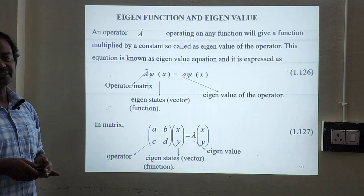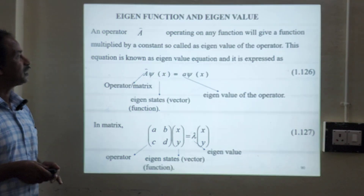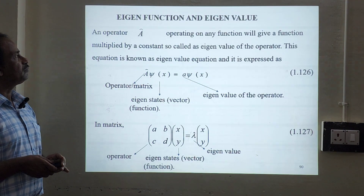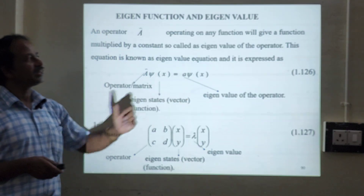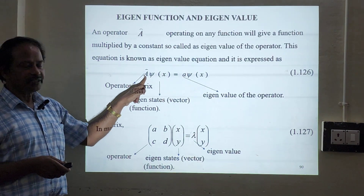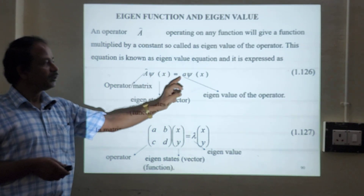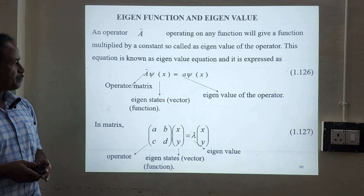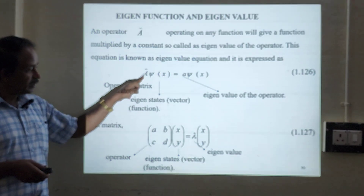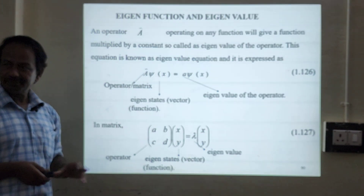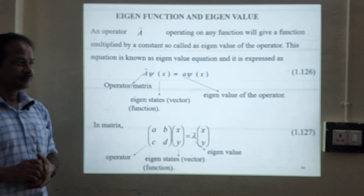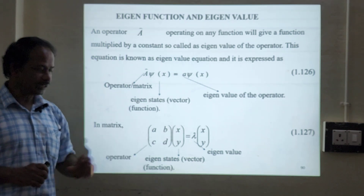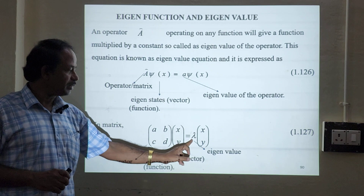The last session will be eigenfunction and eigenvalue. An operator A operating on any function will give a function multiplied by a constant. This constant is called the eigenvalue of the operator. So the operator operates on the wave function and gives eigenvalue times the function. If both the functions are the same, we call them eigenfunctions. In terms of matrices, any operator can be written as a matrix, and x as a vector — for a two-dimensional case, we write [x, y], giving eigenvalue lambda times [x, y].